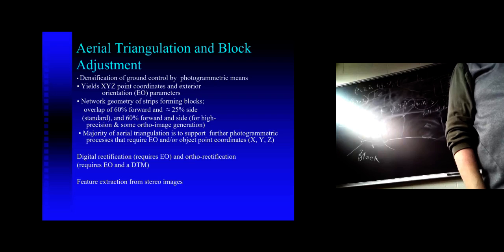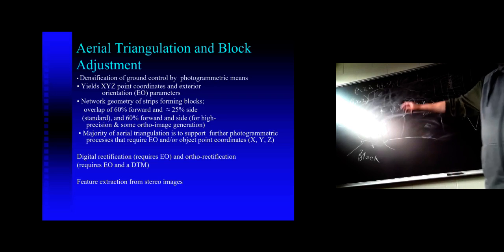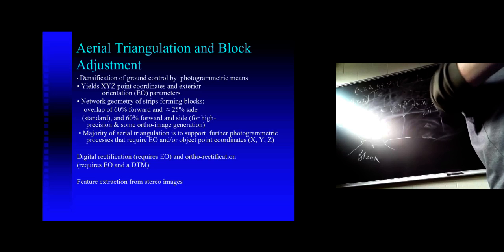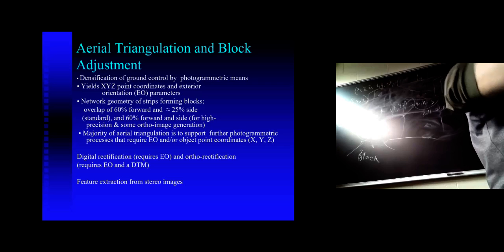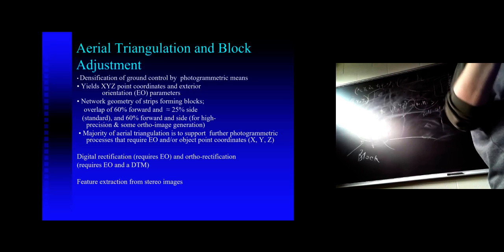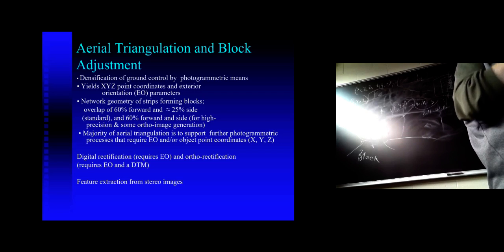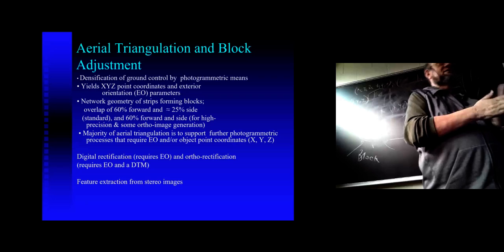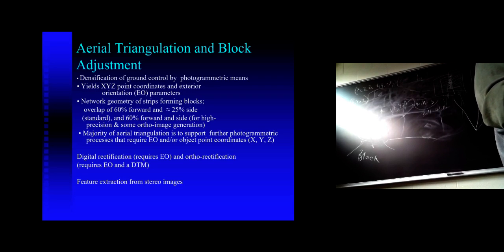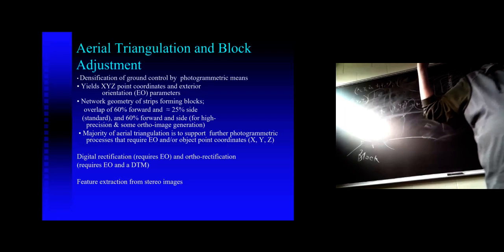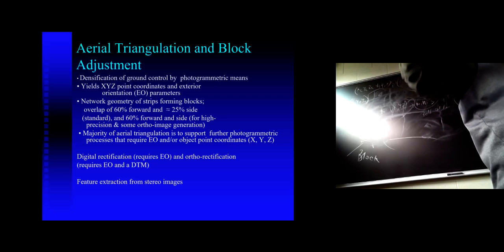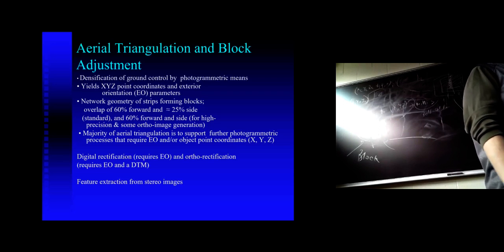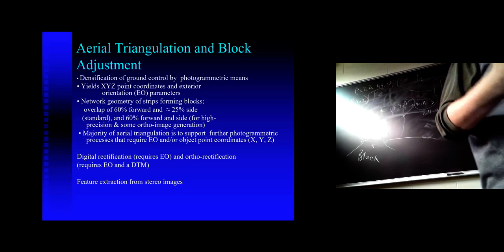The six exterior orientation elements obtained for each image can be used for orthophoto production. If you measure extra points during triangulation, these become control points with adjusted X, Y, Z coordinates based on the accuracy of your photogrammetric measurements, which can then be used as control on the ground. Therefore, another definition of triangulation is 'control densification' — from sparse geodetic control at the edges of a block, we make every tie point a control point. Feature extraction from stereo imaging is not possible without this.